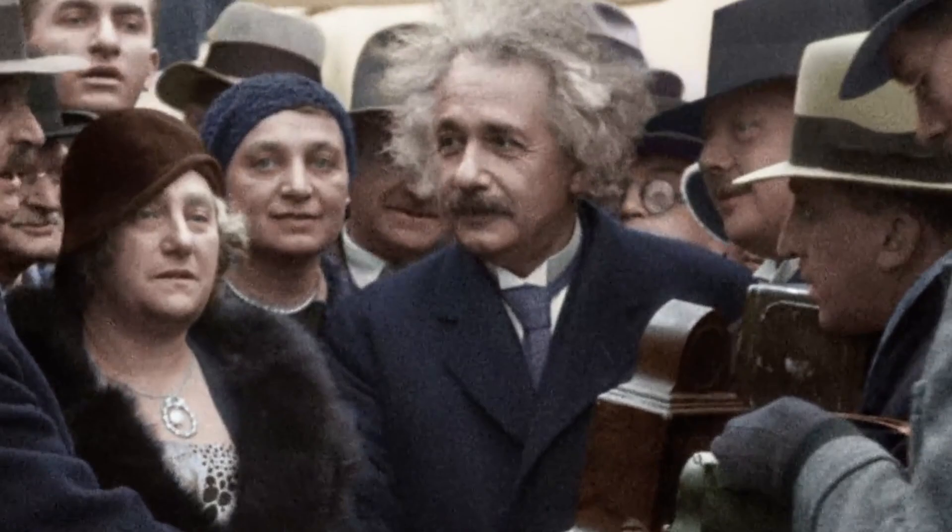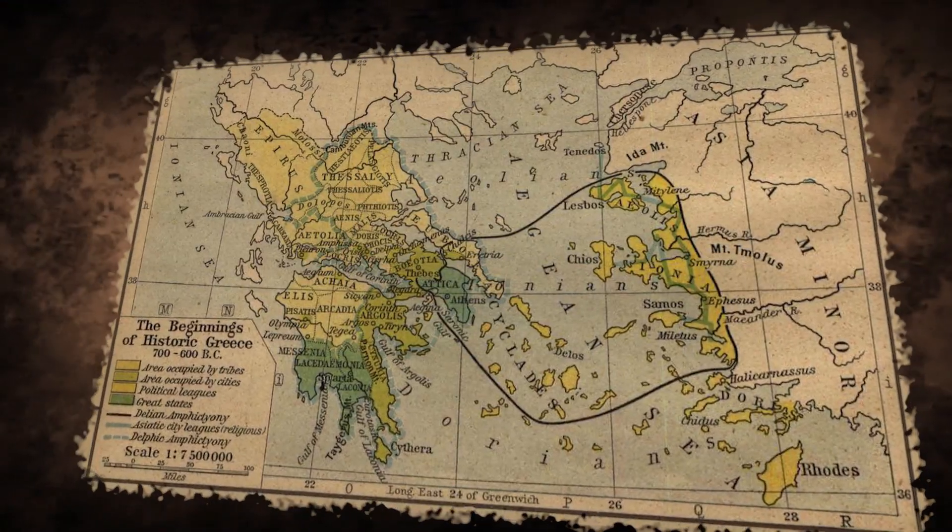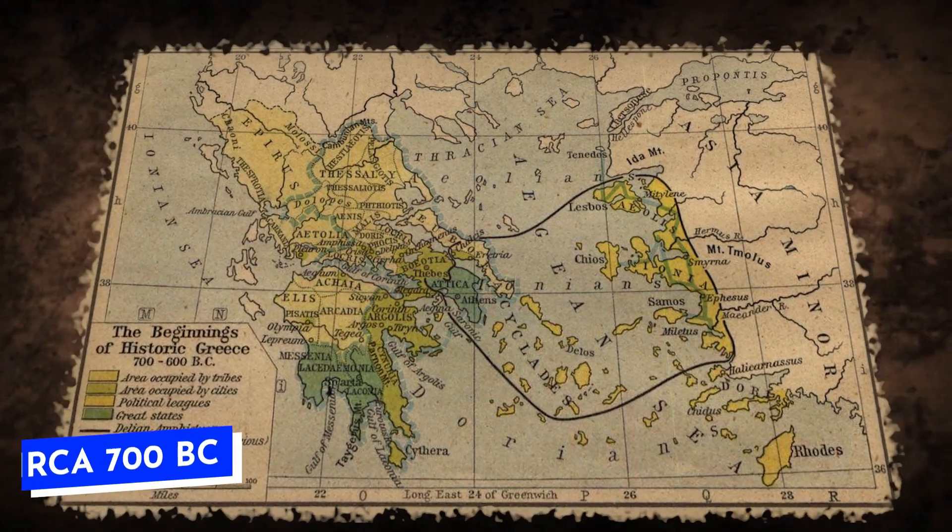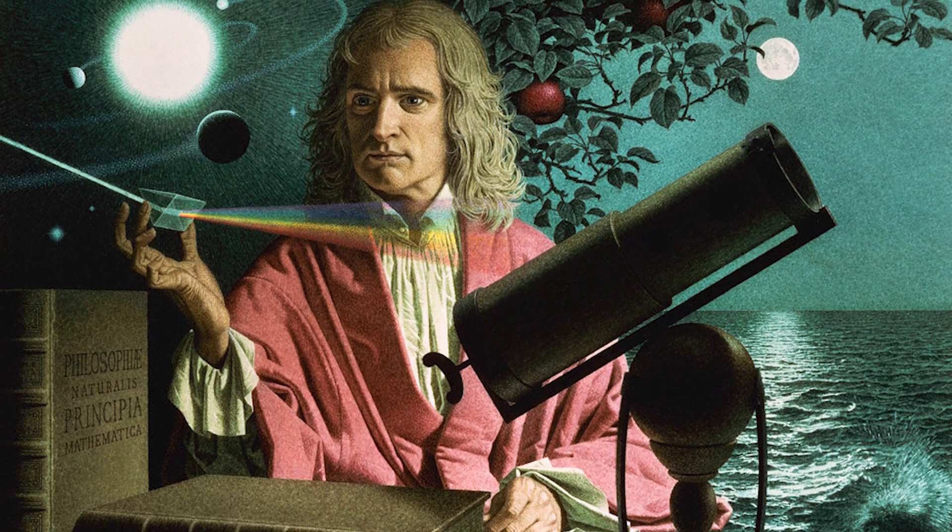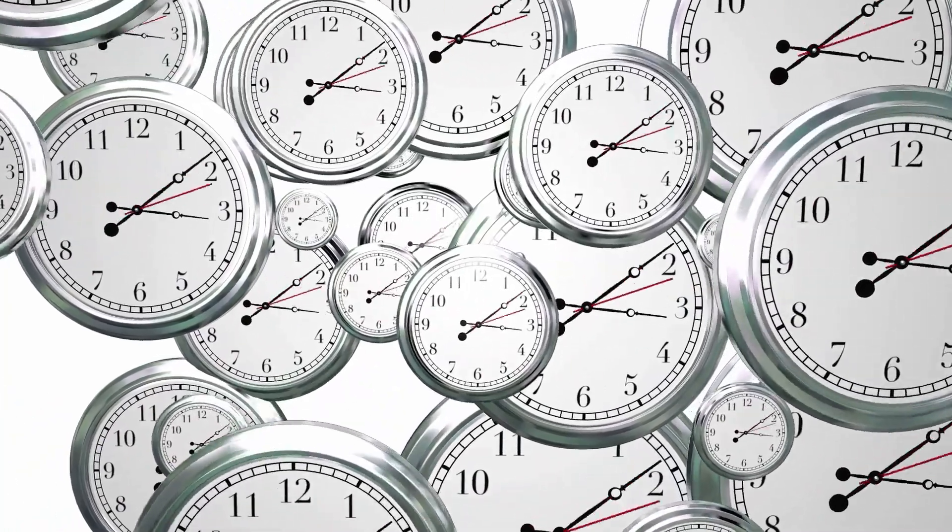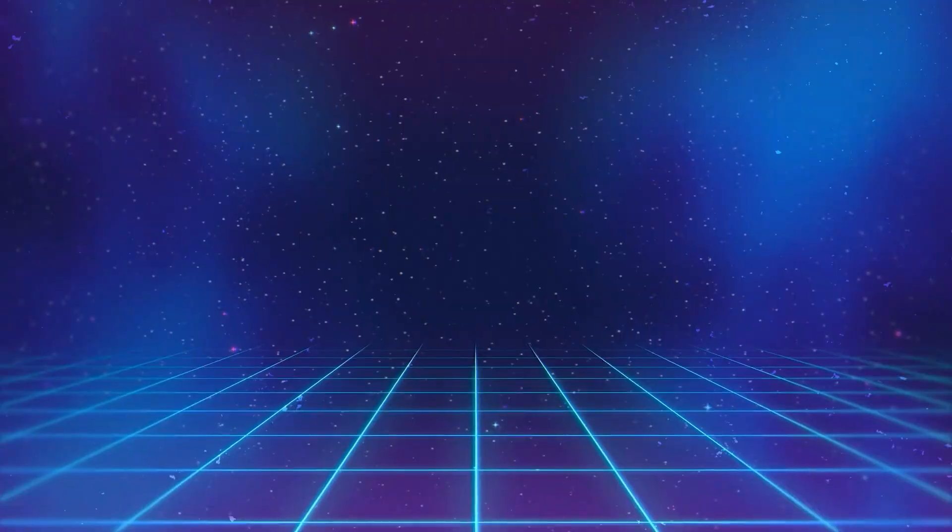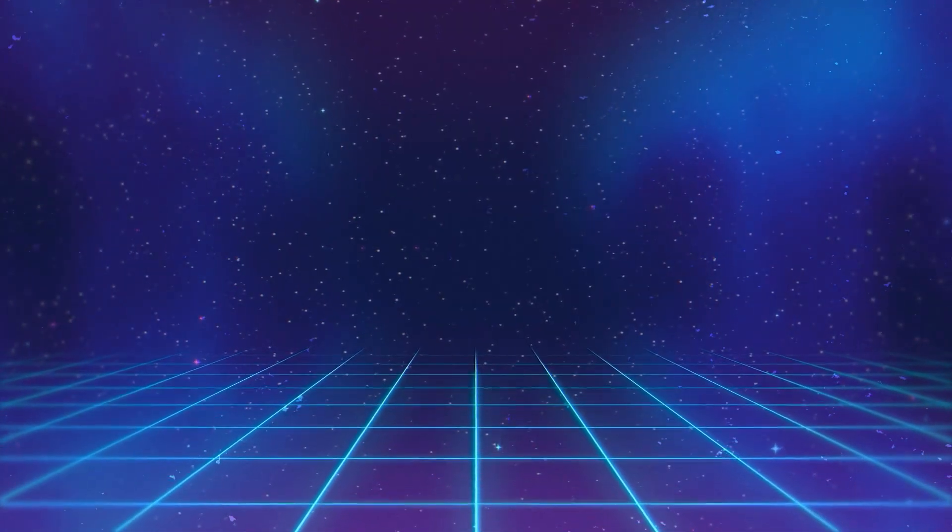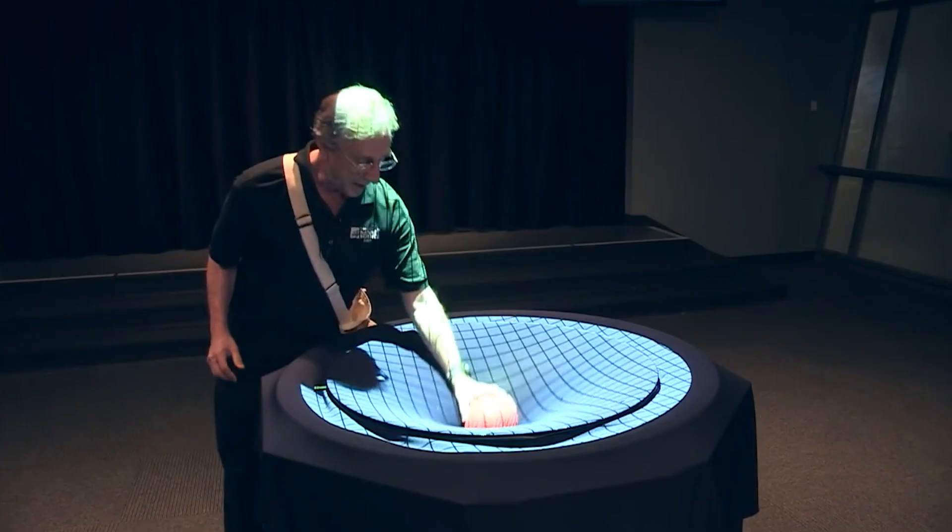Einstein, though groundbreaking, wasn't the pioneer of time manipulation. Time bending tales date back to ancient Greece, circa 700 BC. In 1687, Sir Isaac Newton conceptualized a river of time uniformly flowing everywhere, but it was Einstein who fundamentally altered our perception, tethering time to the fabric of space itself.